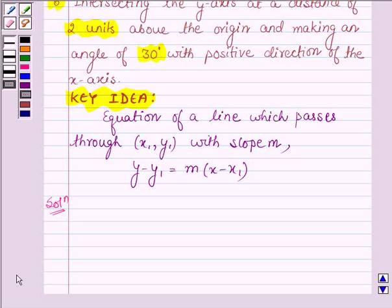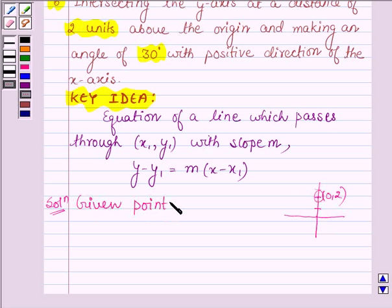Now here we are given that the line intersects the y-axis at a distance of 2 units above the origin. So this is 1 unit and this is 2 units. Now the name of this point is (0, 2), that is here the x coordinate is 0 and the y coordinate is 2. So the given point is (0, 2).